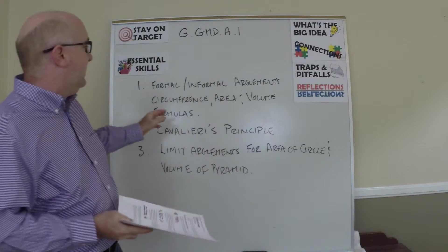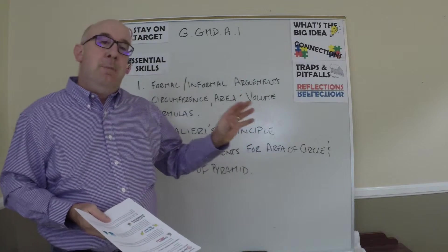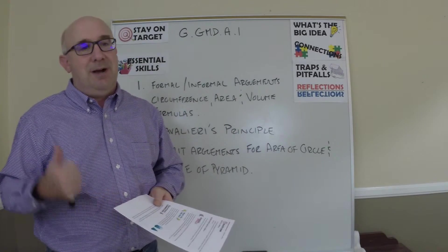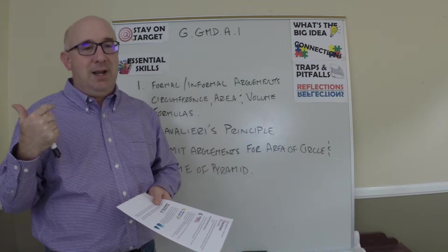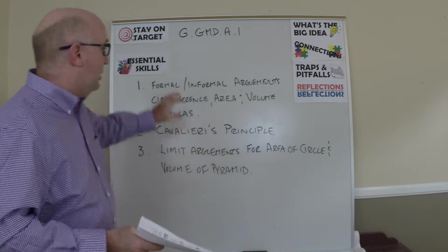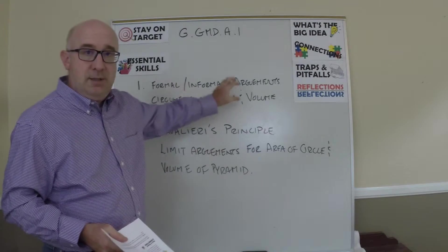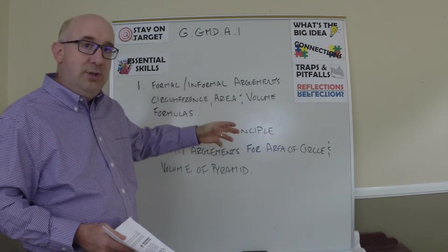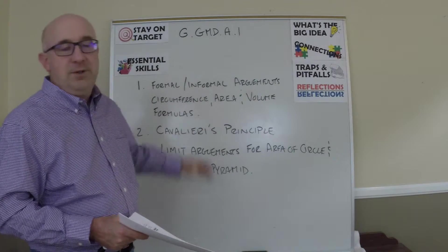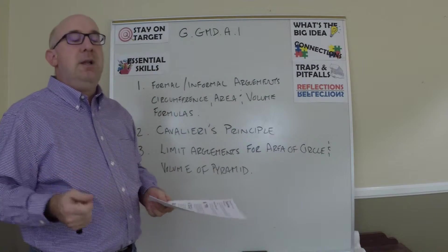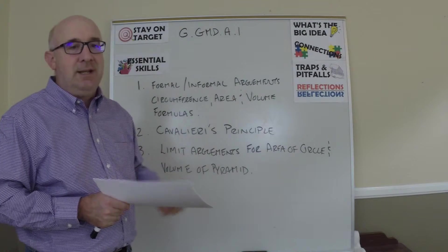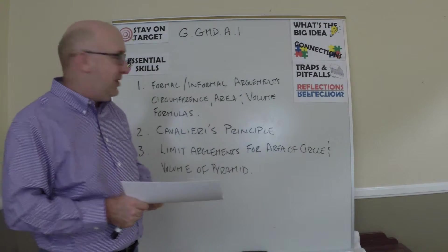Specifically, the formulas deal with volume, but I've included those about circumference and area as well. Area is so essential as you head towards volume, and the circumference relationship helps us later in objectives dealing with radians and understanding that formula and relationship.